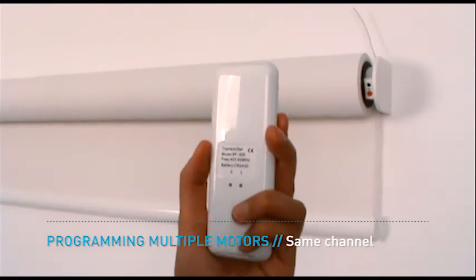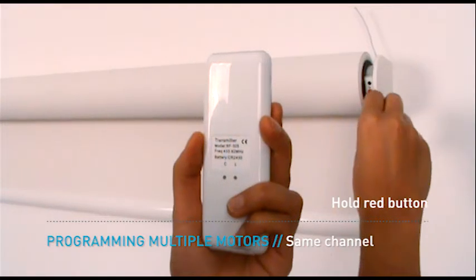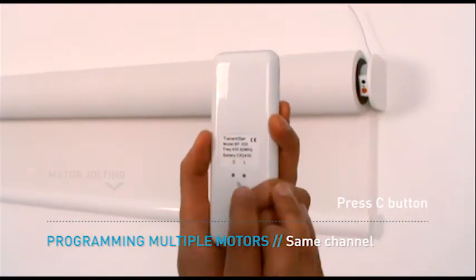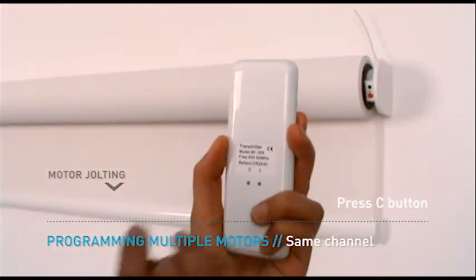Reconnect the first motor to the remote by pressing the red button on the first motor until it jolts once. Within six seconds, press the C button on the back of the remote. The motor will jolt once to confirm pairing.